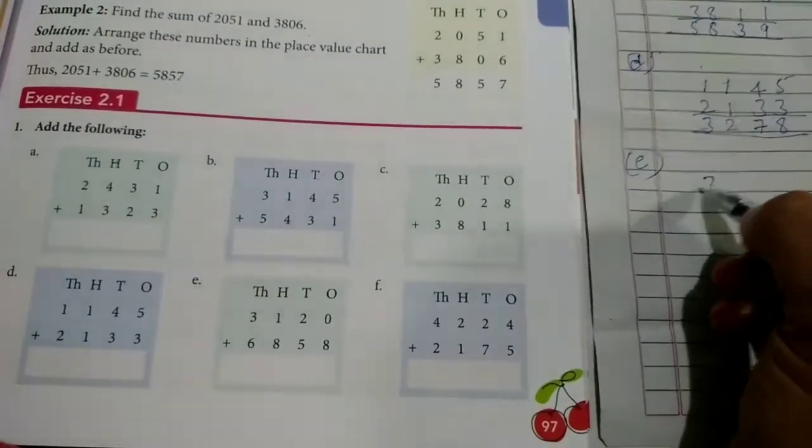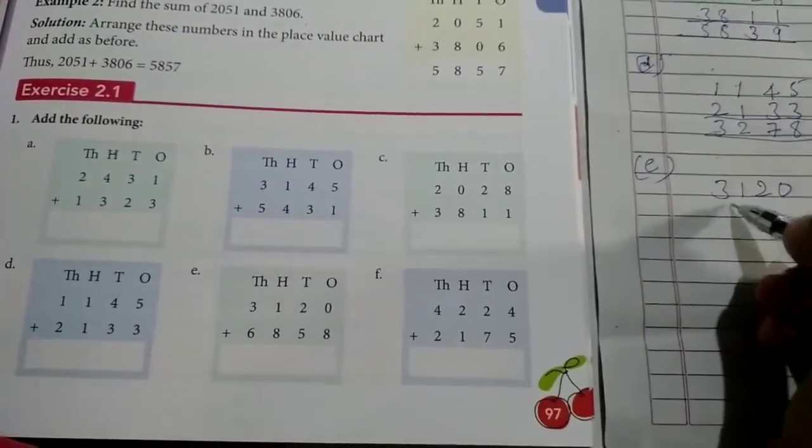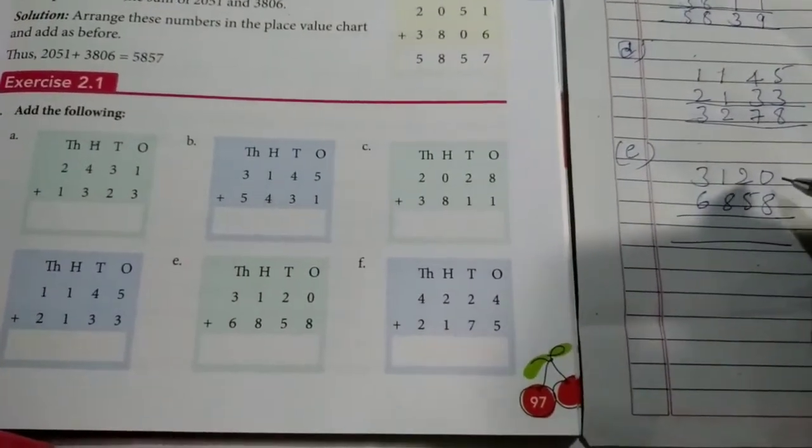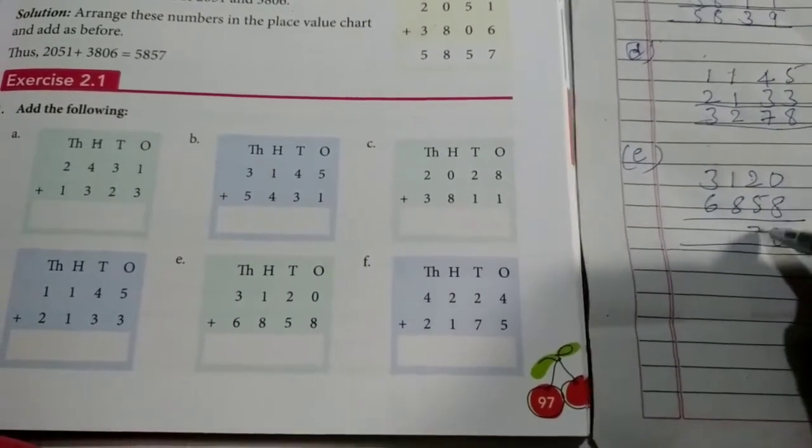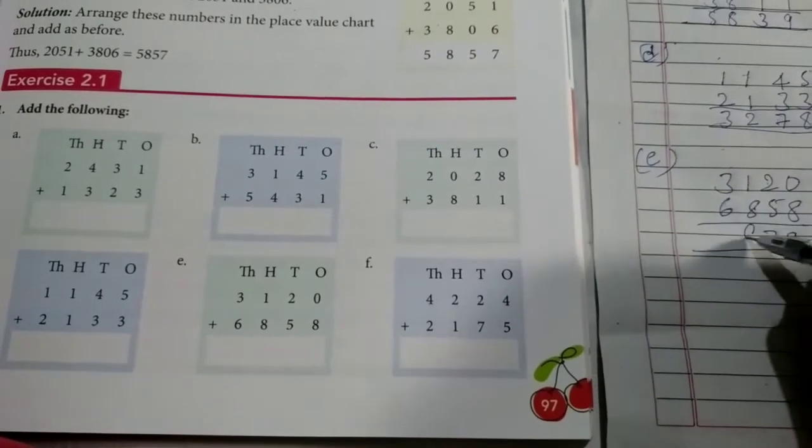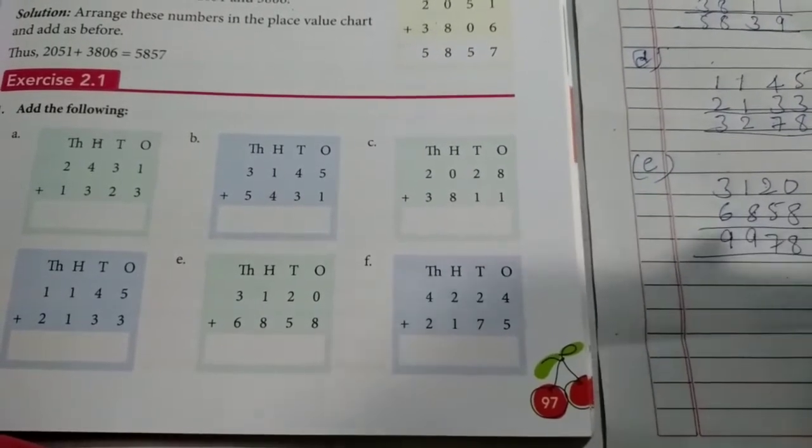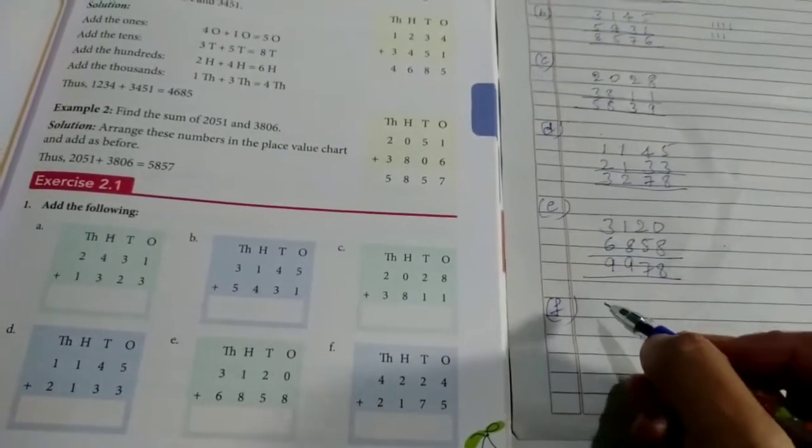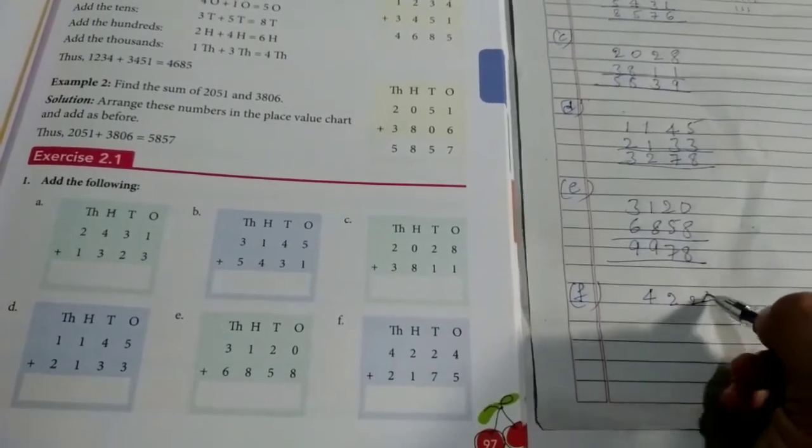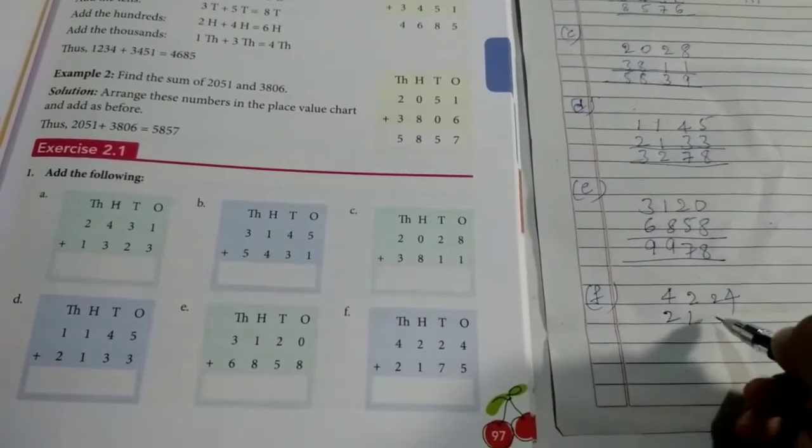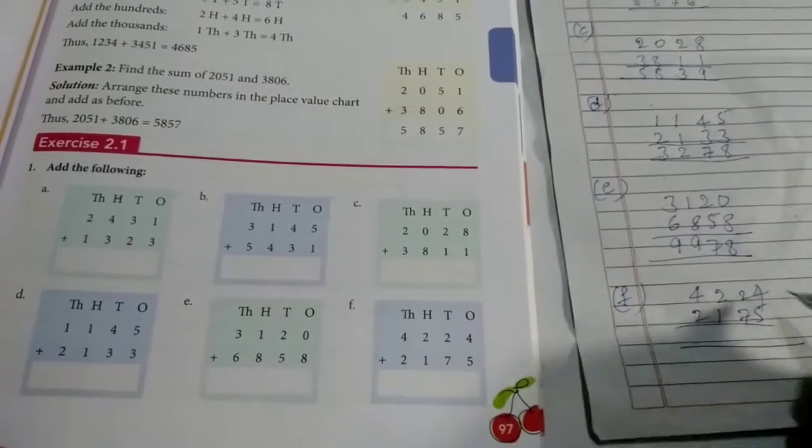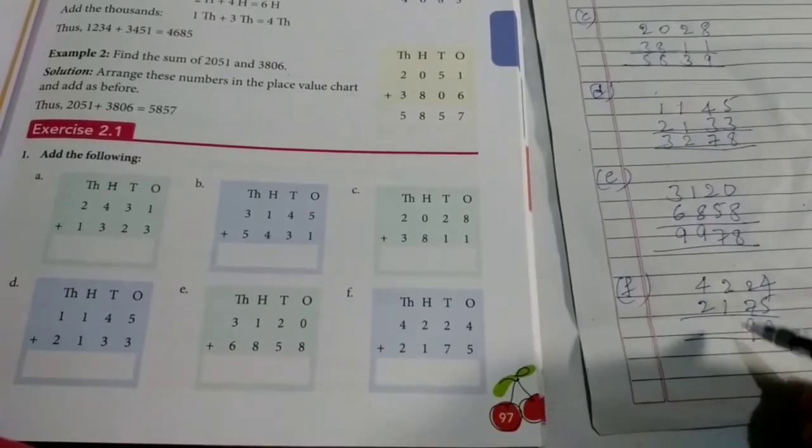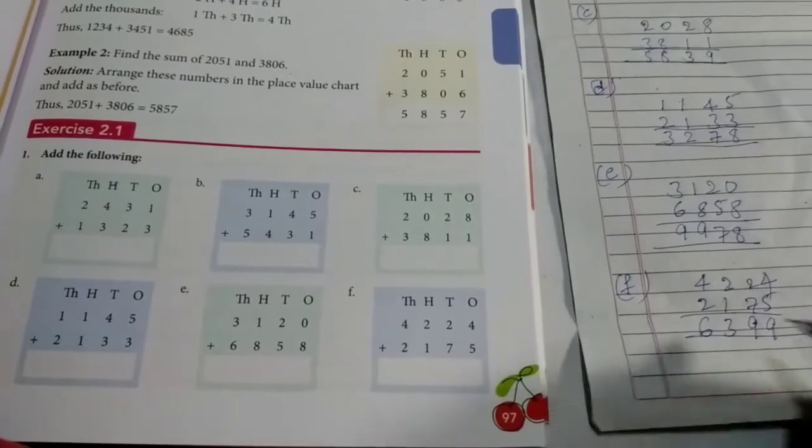Next problem E. 3,120 plus 6,858. 0 plus 8 is 8. 2 plus 5 is 7. 1 plus 8, 9. 3 plus 6 is 9. So next. Next F. 4,224 plus 2,175. 4 plus 5, 9. 2 plus 7, 9. 2 plus 1, 3. 4 plus 2, 6.